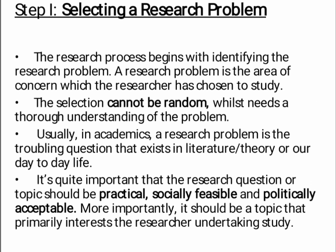The first step is selecting the research problem. The research process begins with identifying the research problem — an area of concern which the researcher has chosen to study. The selection cannot be random; it needs a thorough understanding of the problem. Usually in academics, a research problem is the troubling question that exists in literature, theory, or our day-to-day life. It is quite important that the research questions or topics should be practical, socially feasible, and politically acceptable. More importantly, it should be a topic that primarily interests the researcher undertaking the study.